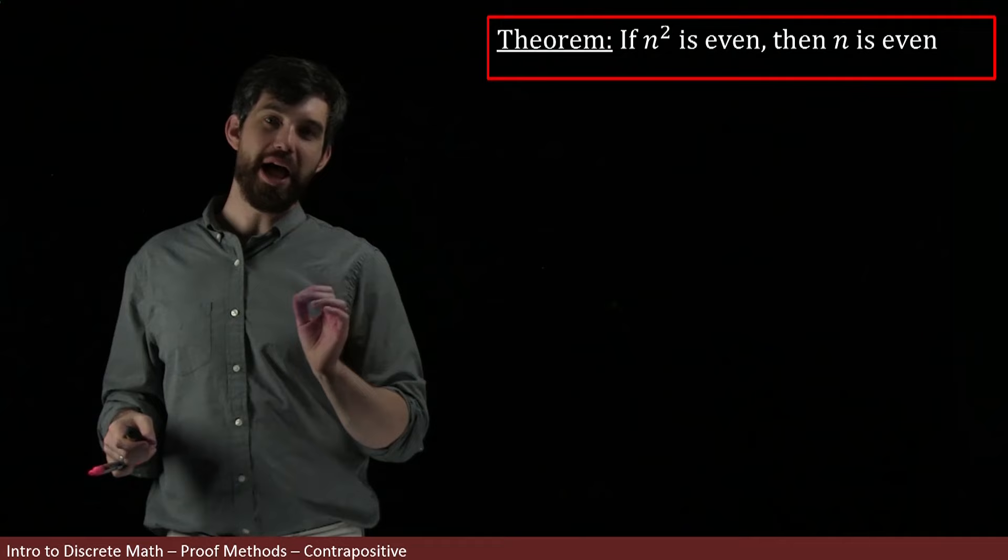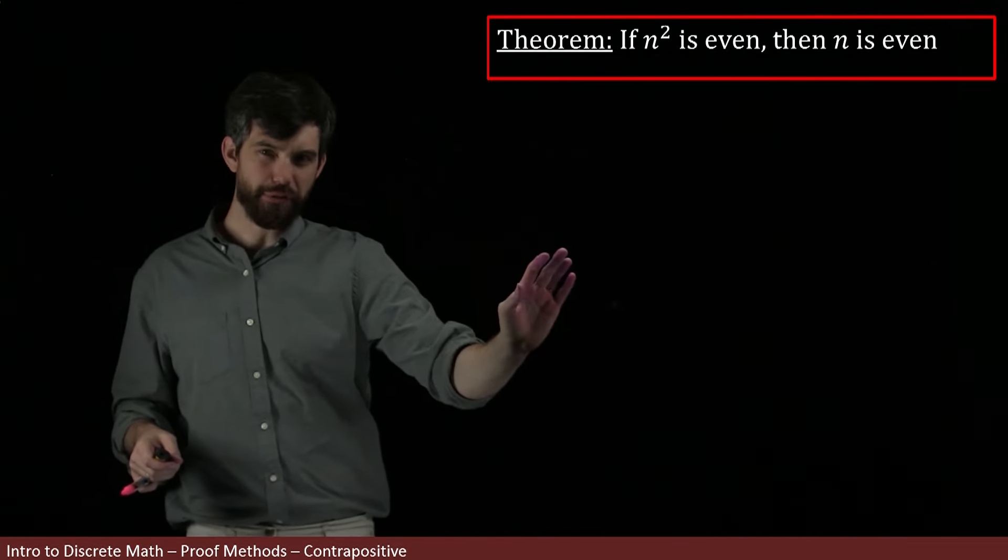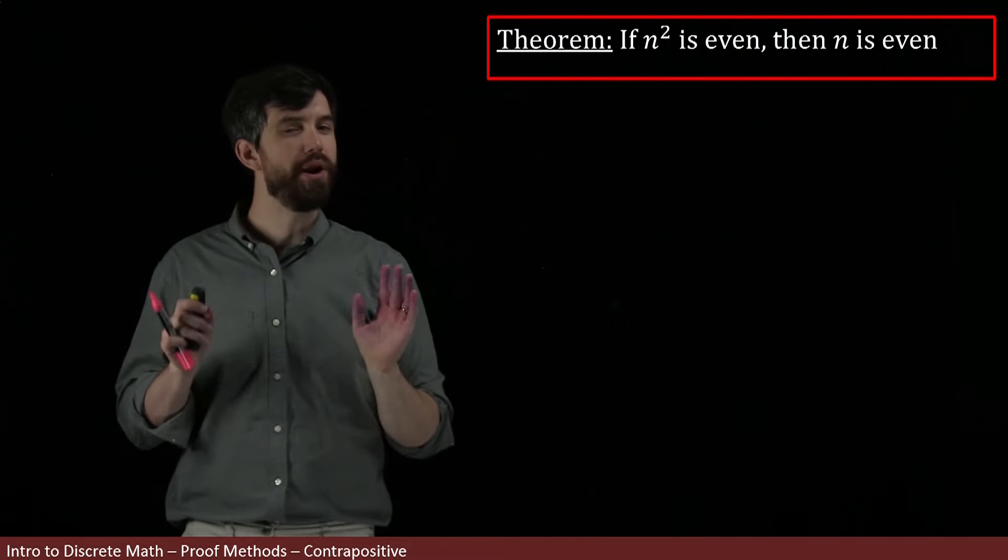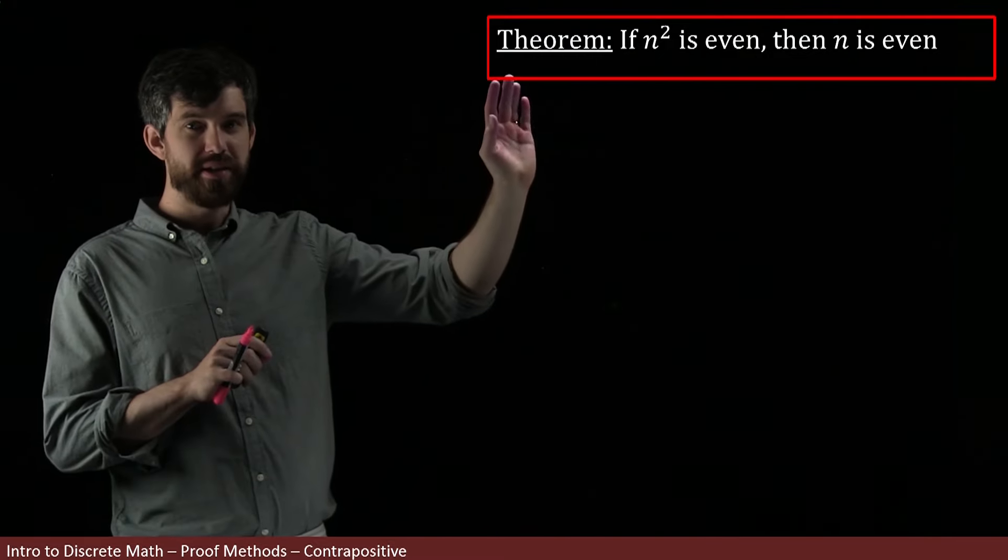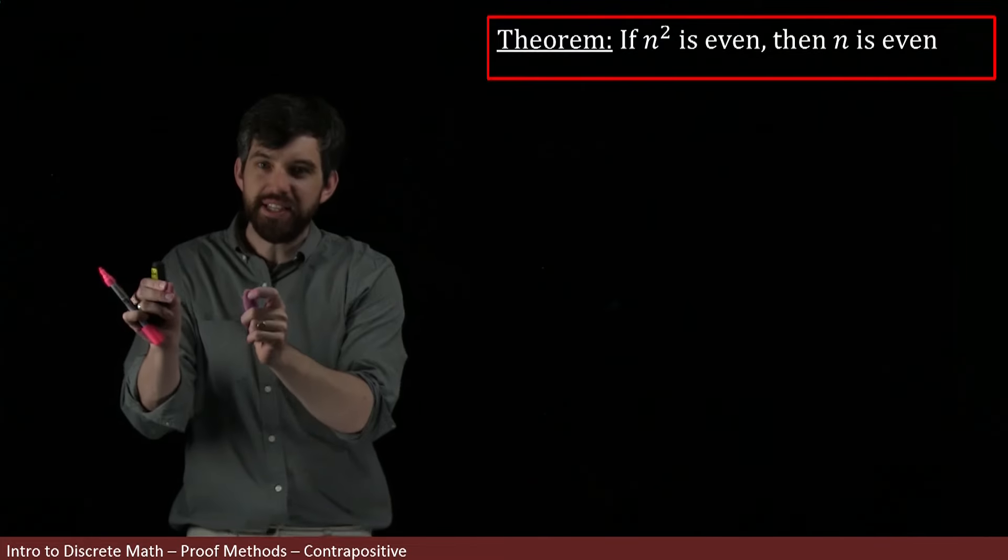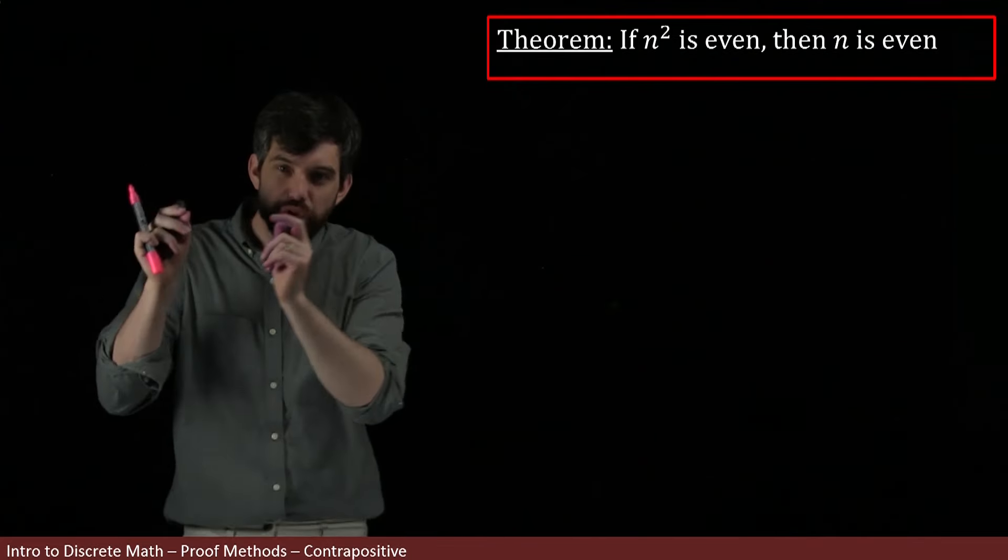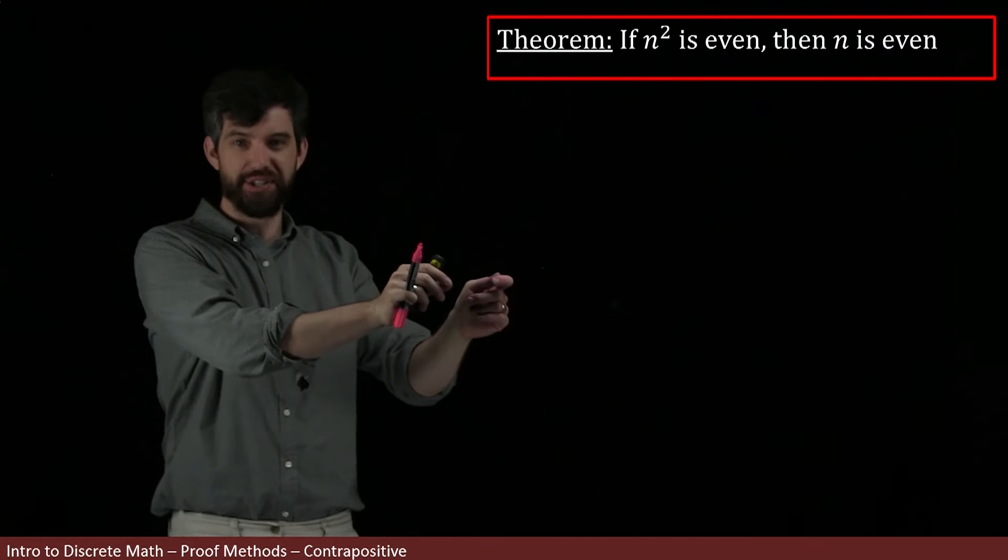In this theorem, I'm saying if n² is even, then n itself is also even. Note carefully, this is different from the theorem we've seen in a previous video. This is not saying if n is even, then n² is even - it's the other way around. It's saying if n² is even, then n is even.